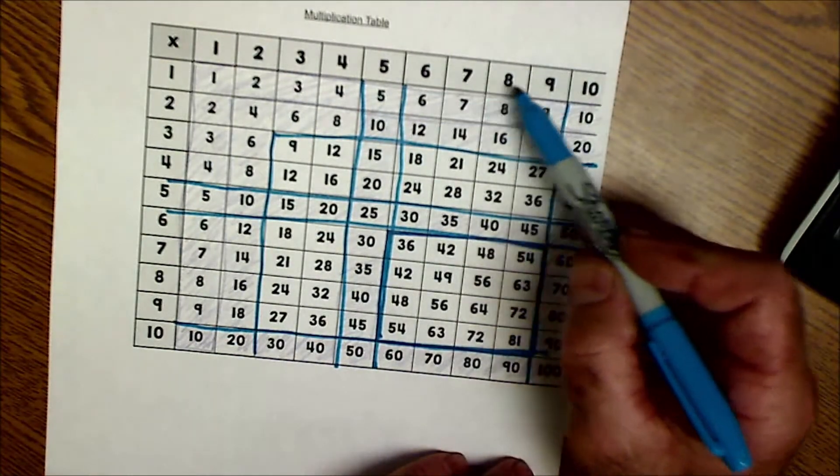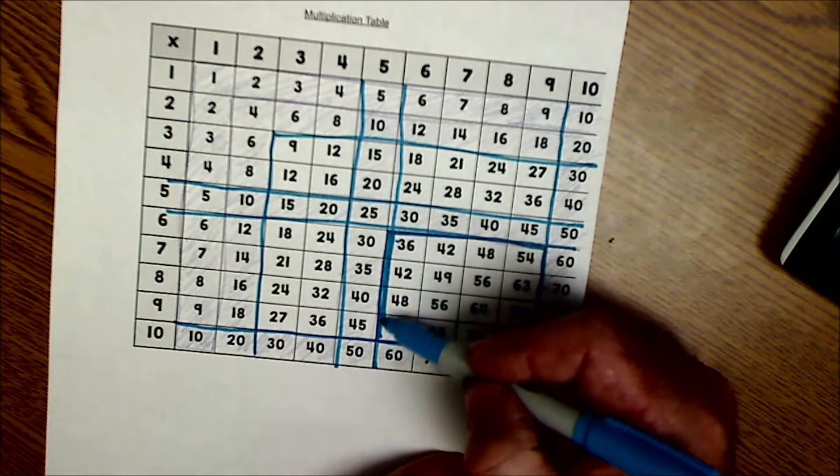And then that only leaves you with your 6, 7, 8, and 9. 6, 7, 8, and 9. So it's this little square here.